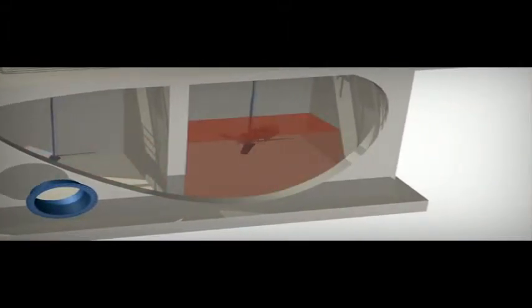In this first flocculation tank, recycled microsand and polymer are introduced and mixed. The microsand becomes the nucleus for a very dense, fast-settling flock particle.